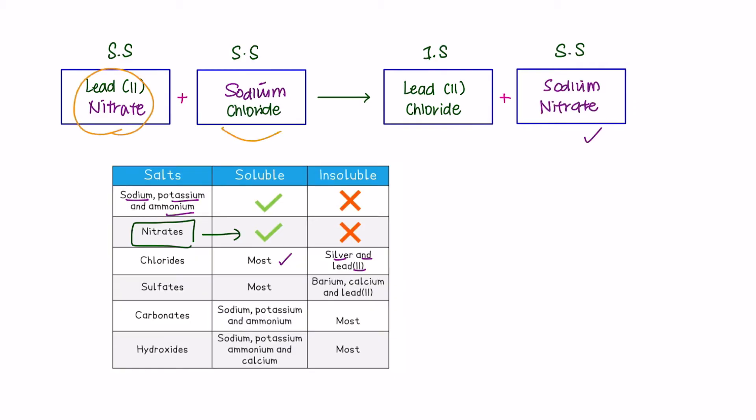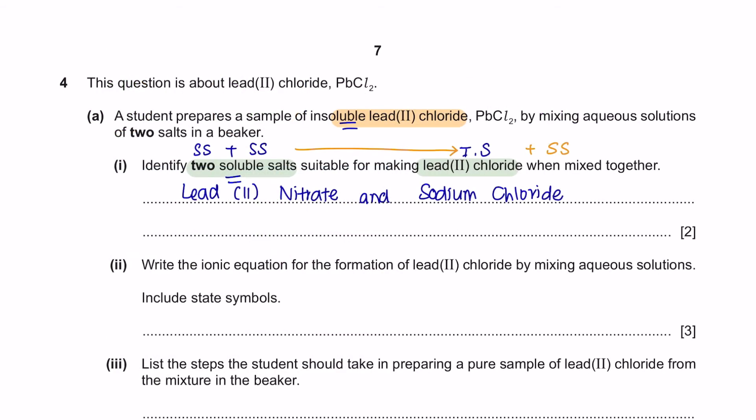Part 2: Write the ionic equation for the formation of lead chloride by mixing aqueous solutions. Include the state symbols. Let's do this step by step because you are given quite a lot of marks, which are three. We have here lead chloride which is PbCl2, meaning that it is a reaction of Pb2+ and Cl-. Doing this will give you your first mark.